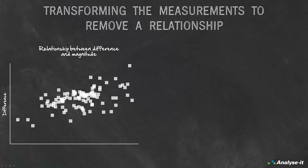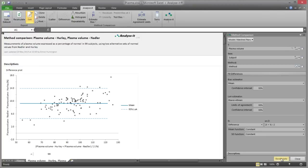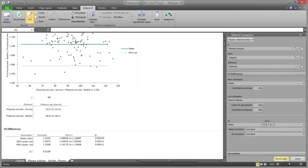When the differences are related to magnitude, it is best to try to eliminate the relationship using a transformation. Logarithmic transformation is often used to remove the effect of differences increasing with magnitude, because it has a clear interpretation: the difference between the logarithms of two values is equivalent to the ratio of the two values. Other transformations such as square root or reciprocal cannot be clearly interpreted and are best avoided. However, rather than use a logarithmic transformation, it is usually easier to use the ratio of the measurements or the difference expressed as a percentage of the mean.